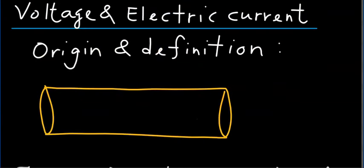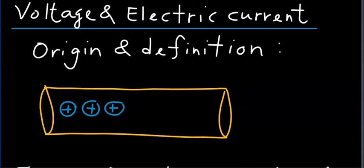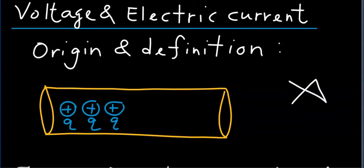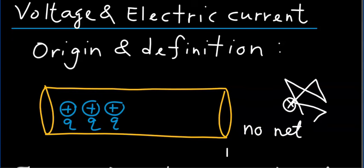Let's first begin with the origin and definition of electric current. Let's assume you have a conductor, and within that conductor you have lots of positive charges — let's show three of them for the sake of argument. Each of these charges carry a charge of little q coulombs. These charges do not stay put; they are not completely stationary. What they do is they move randomly, and on average they end up where they began. So there is no net motion for these charges within that conductor.